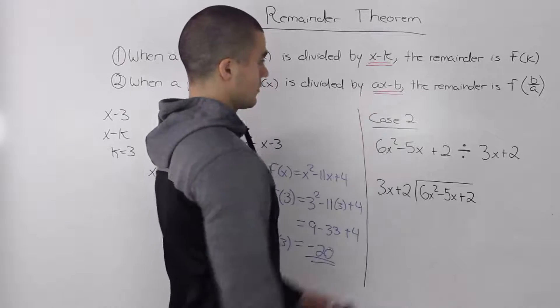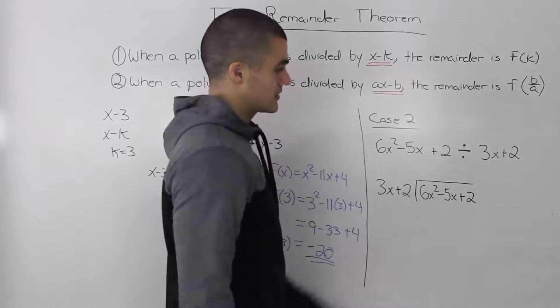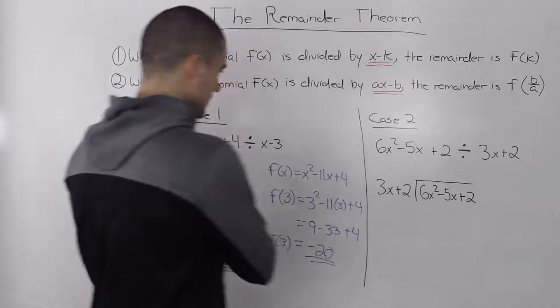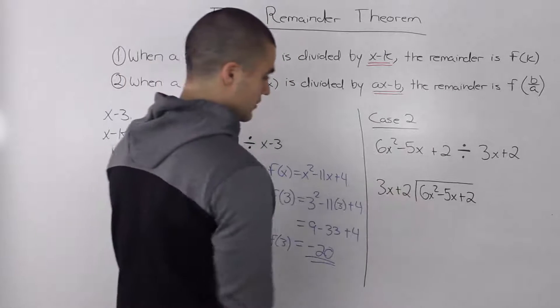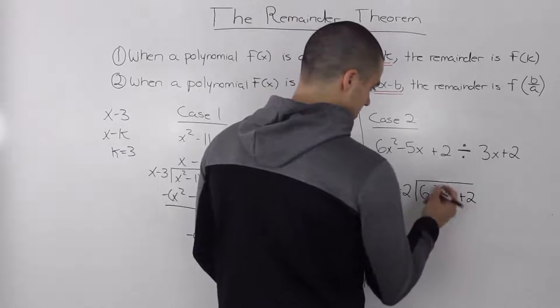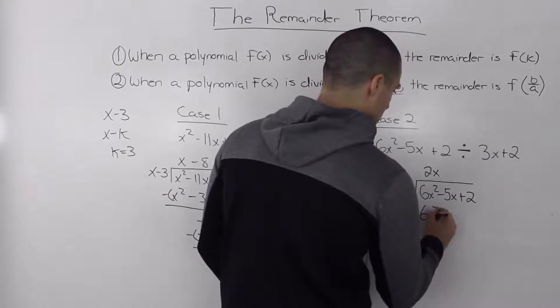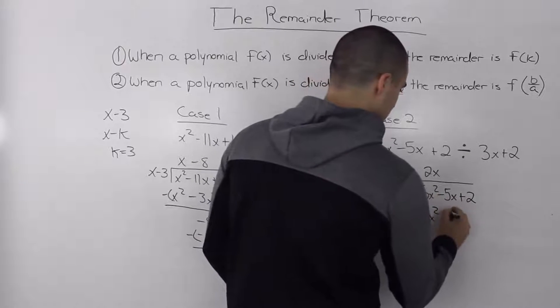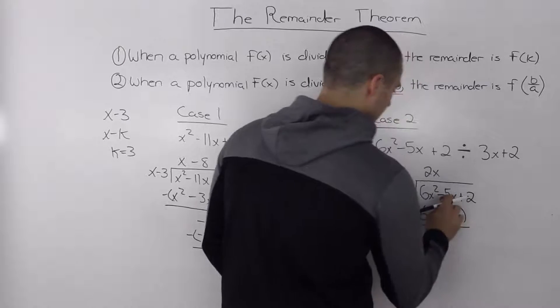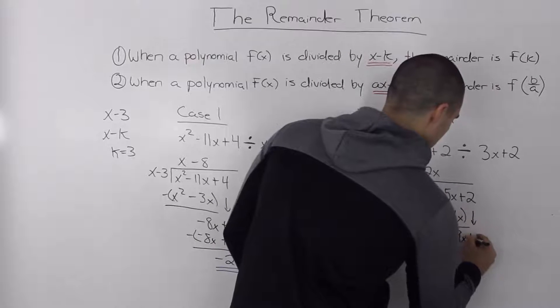Now let's illustrate the remainder theorem with a second case. We got 6x squared minus 5x plus 2 divided by 3x plus 2. As we did in this case, I'm going to do this with long division to begin with. So 3x goes into 6x squared 2x times. 2x times 3x is 6x squared. 2x times 2 is 4x. Subtract these. Negative 5x minus 4x is negative 9x. Bring the 2 down.